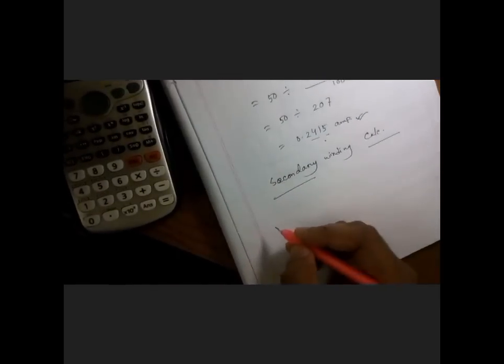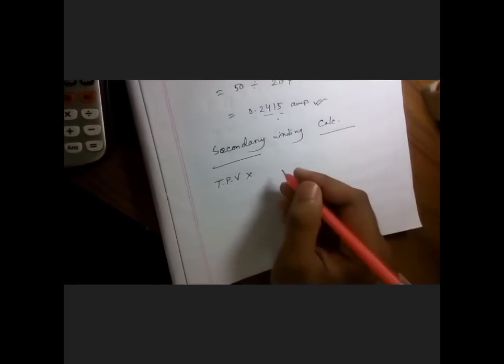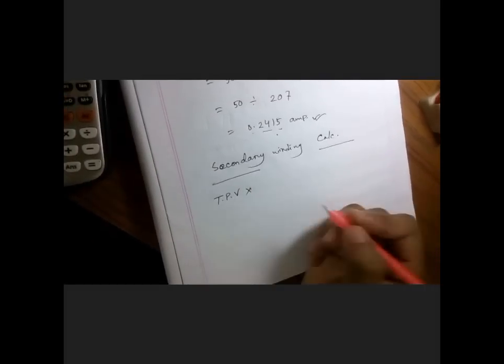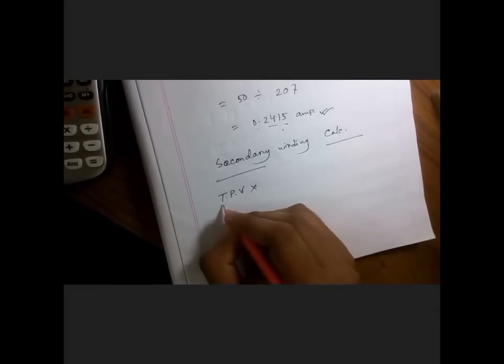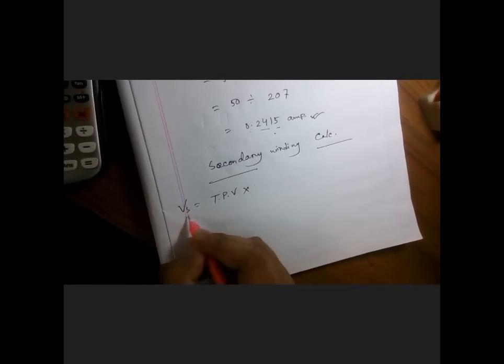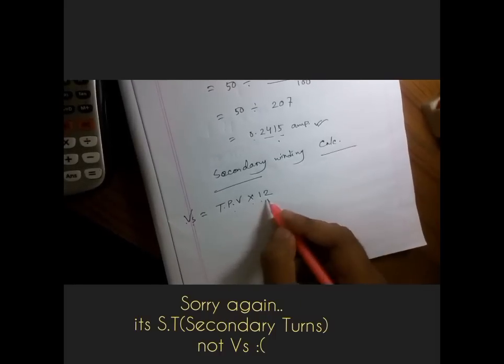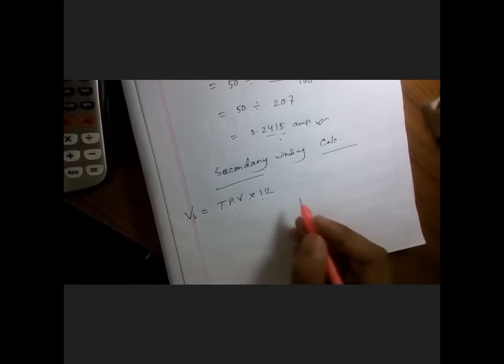So as usual, as in the primary side, turns per volt into how much volts you want in secondary side. Suppose I want 12 volt, so you have to. So Vs as secondary volt equal to turns per volt into 12. If you want much, then you can increase by yourself.